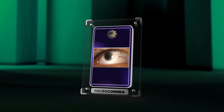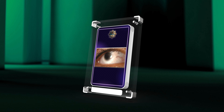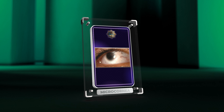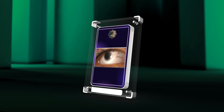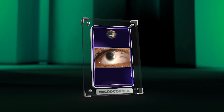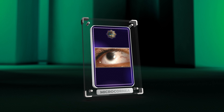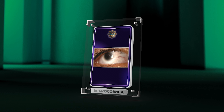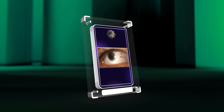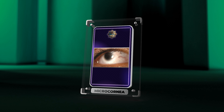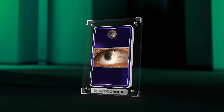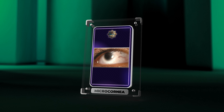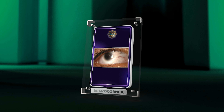Microcornea is a complex condition with genetic and non-genetic causes. It is associated with corneal opacities, refractive errors, glaucoma, and other abnormalities. Management involves a multidisciplinary approach to optimize visual outcomes and address complications. Diagnosis, evaluation, and treatment selection are crucial. Advancements in imaging, contact lenses, and surgery offer potential for improved care, and ongoing research and collaboration are essential.